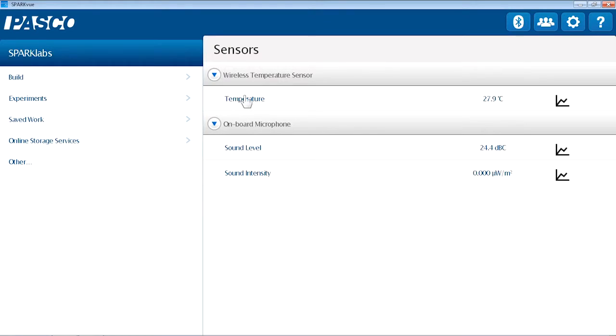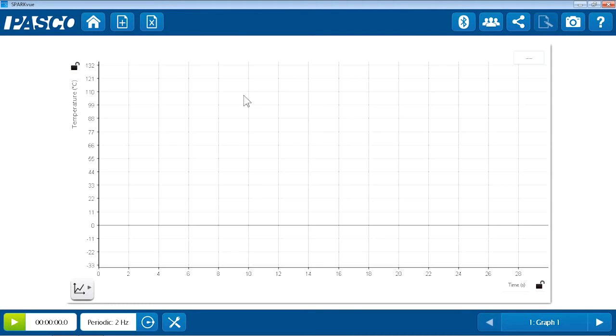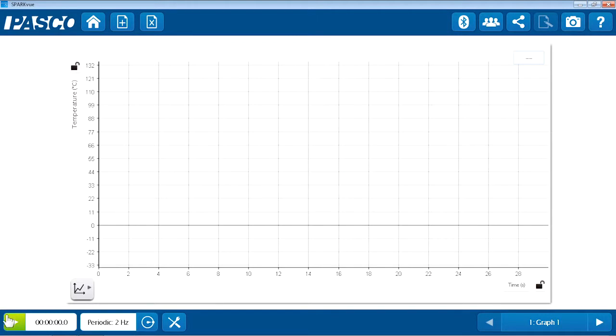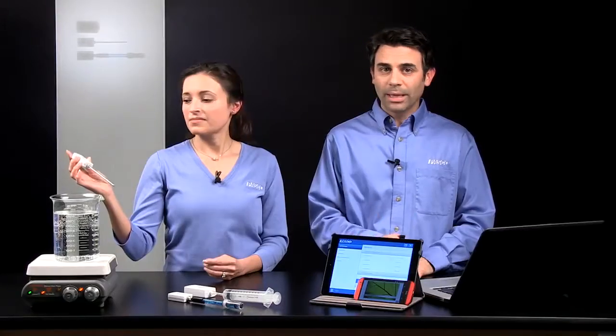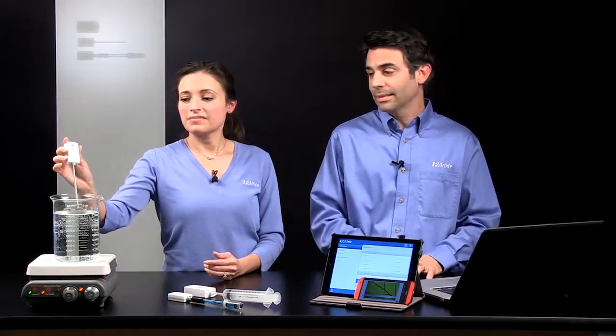Right. So on this home screen, now that I'm connected, the temperature measurement is available. So I'll touch temperature, and automatically I'm launched into a graph. And I can start collecting data. So seconds from turning it on, to pairing, and connecting, to collecting data.